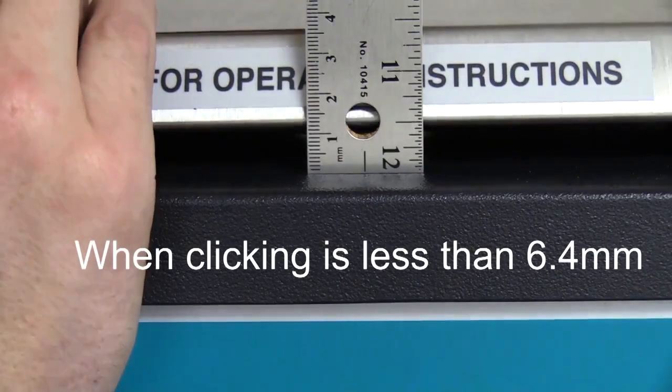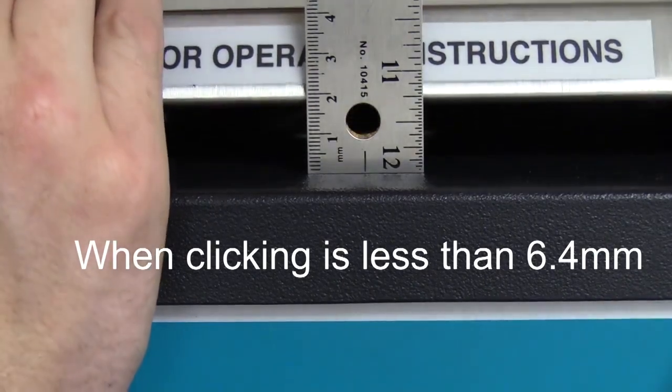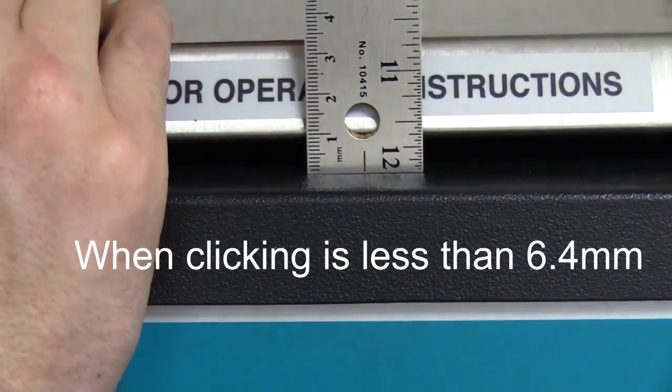If the microswitch is activating when the lid is less than 6.4 mm from the top, tighten the turnbuckle nut clockwise.